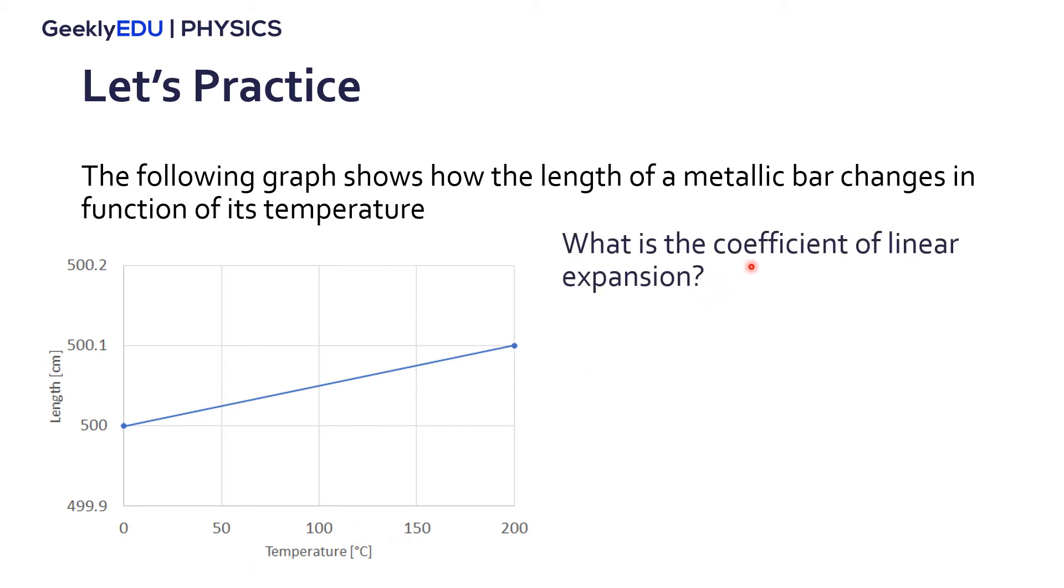So what is the coefficient of linear expansion for this metallic bar? Well, we can see here in the graph the variation in length, it starts at 500 centimeters and ends at 500.1 centimeters, so the variation is 0.1 centimeters. And also from the graph the variation in temperature is 200 degrees Celsius.